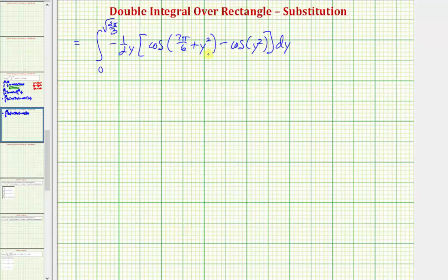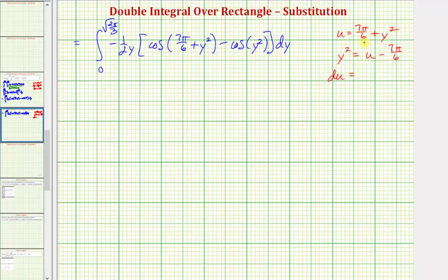Here we'll let u equal seven pi divided by six plus y squared. Notice how here we just have cosine of y squared, so let's also solve this for y squared. Notice that y squared would be equal to u minus seven pi divided by six. Now we need to find du, which is the derivative of seven pi divided by six plus y squared with respect to y times dy, which would be two y dy. Again, we don't have a factor of two, so let's divide both sides by two. So we know that one half du is equal to y dy.